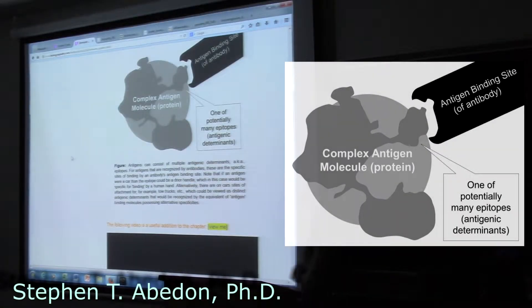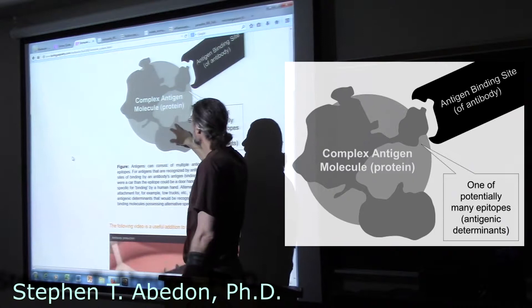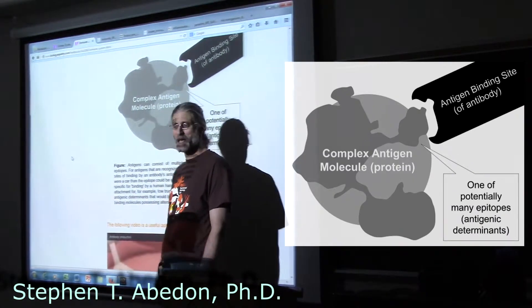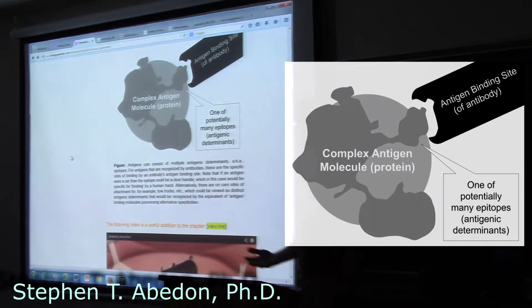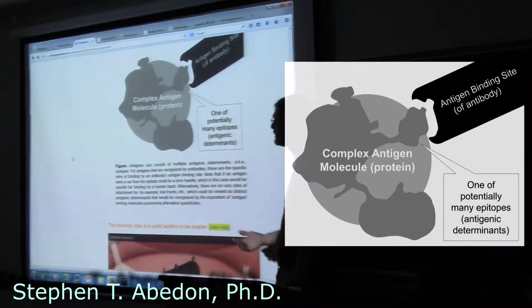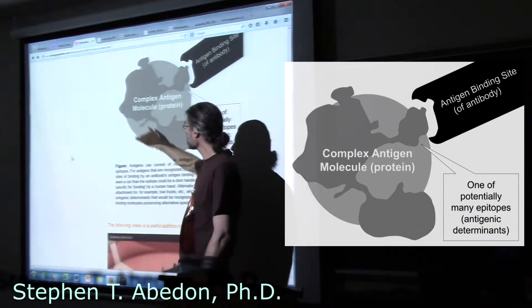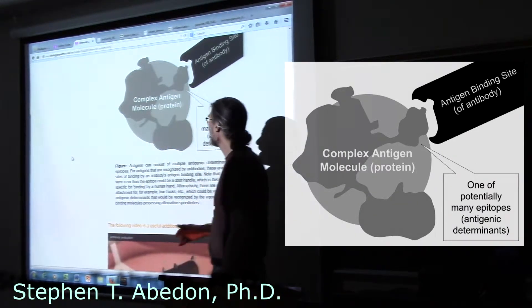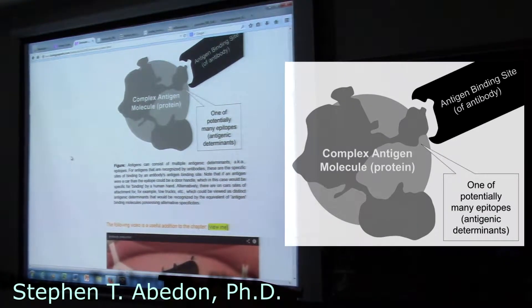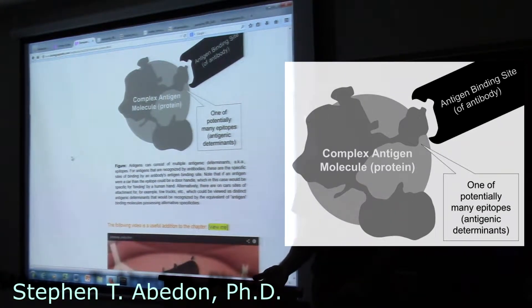If we think of an antigen as being a complex molecule, this shape is supposed to give you the sense of having this complex molecule. There are specific locations on the complex molecule that an antibody can bind to.